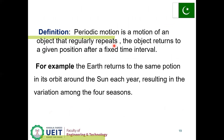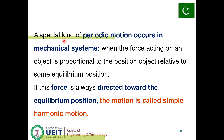Definition: periodic motion is the motion of an object that regularly repeats — the object returns to a given position after a fixed time interval. For example, the Earth returns to the same position in its orbit around the Sun each year, resulting in the variation among the four seasons; so Earth's motion is also periodic. A special kind of periodic motion occurs in mechanical systems when the force acting on an object is proportional to the object's position relative to some equilibrium position.